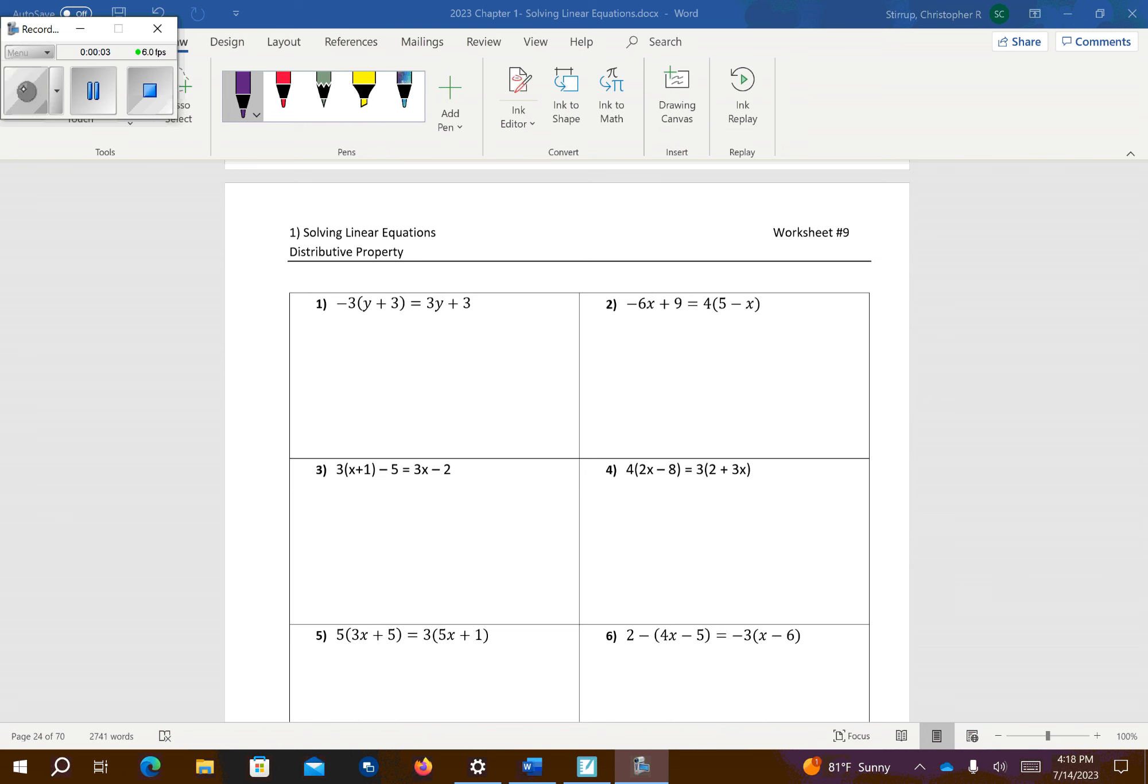Hi, C.P. Alduan. This is SLE worksheet number 9. It looks like we have to distribute over parentheses first, so remember distributes like multiplication, so negative 3 times y is negative 3y, 3 times 3 is negative 9, equals 3y plus 3. So we need now to start moving things back and forth, so perhaps I would add 3y both sides. Those cancel, so I get negative 9 equals 6y plus 3.